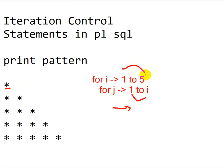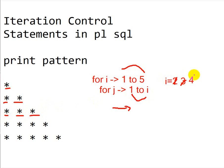When I equals 1, one star is printed. When I becomes 2, the inner loop iterates twice, printing two stars. When I becomes 3, J iterates from 1 to 3, printing three stars. When I is 4, four stars are printed. When I becomes 5, J iterates from 1 to 5, printing five stars. Since I only goes from 1 to 5, the loop then ends.